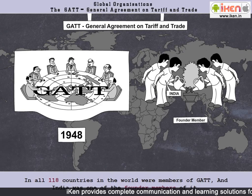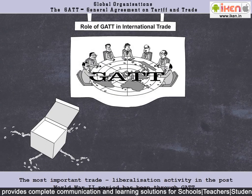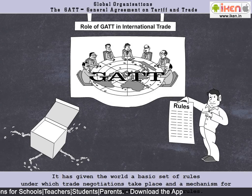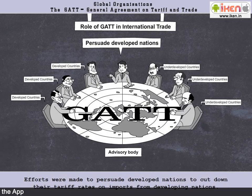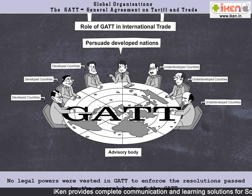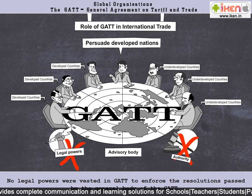The most important trade liberalization activity in the post-World War II period has been through GATT. It has given the world a basic set of rules under which trade negotiations take place and a mechanism for monitoring the implementation of these rules. Efforts were made to persuade developed nations to cut down their tariff rates on imports from developing nations. However, the role of the GATT has been in the capacity of an advisory body. No legal powers were vested in the GATT to enforce the resolutions passed by the general body.